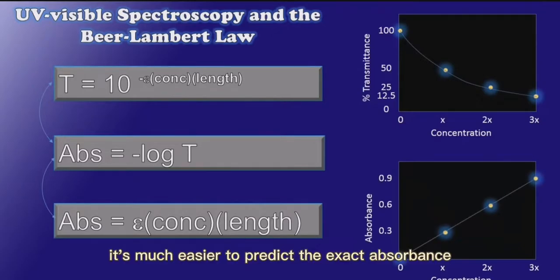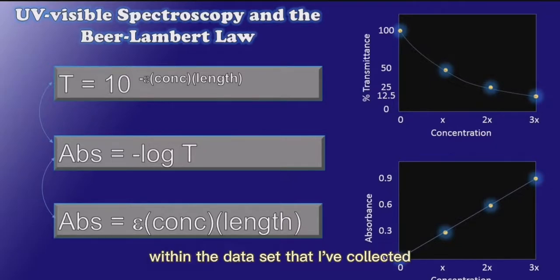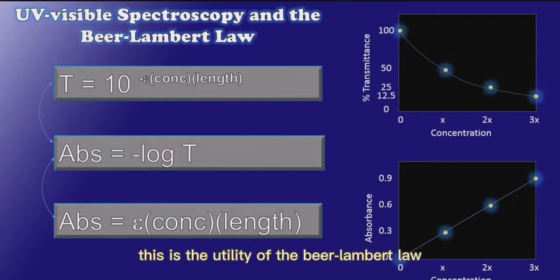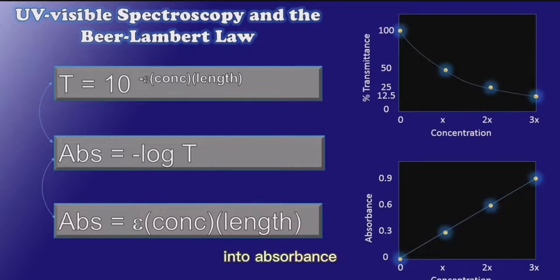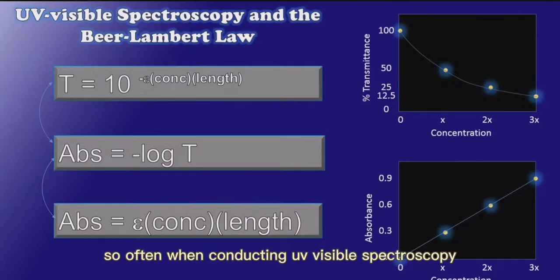Not to mention, it's much easier to predict the exact absorbance by either extrapolating or interpolating within the data set that I've collected. This is the utility of the Beer-Lambert law and the reason why we convert percent transmittance into absorbance so often when conducting UV visible spectroscopy.